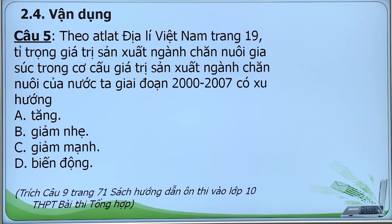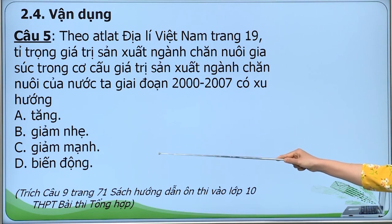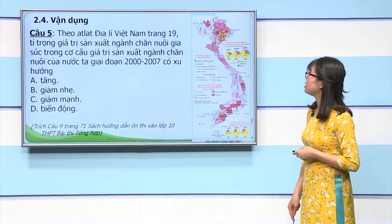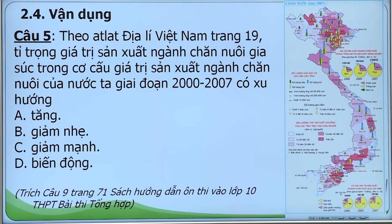Câu 5: Theo Atlas Địa Lý Việt Nam trang 19, tỉ trọng giá trị sản xuất ngành chăn nuôi gia súc trong cơ cấu giá trị sản xuất ngành chăn nuôi của nước ta giai đoạn 2000-2007 có xu hướng: A. Tăng; B. Giảm nhẹ; C. Giảm mạnh; D. Biến động. Quan sát Atlas trang 19, bản đồ ngành chăn nuôi, khai thác biểu đồ cơ cấu giá trị sản xuất ngành chăn nuôi qua các năm, ta thấy ngành gia súc đang có tỉ trọng giá trị sản xuất có xu hướng tăng. Đáp án A.